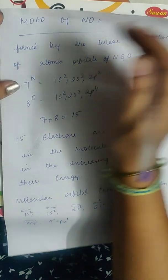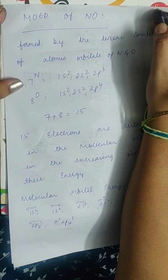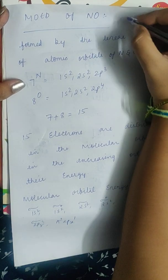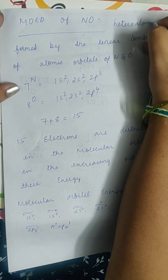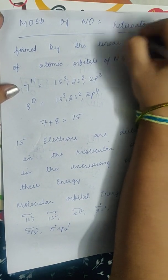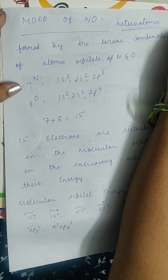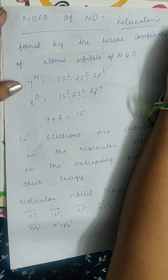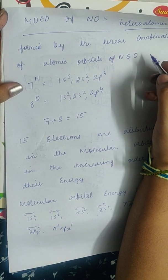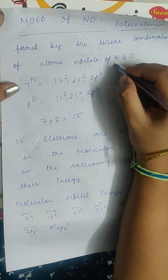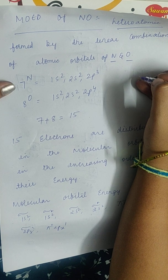Good afternoon girls. Today we are starting with the molecular orbital energy diagram of nitric oxide. It is a heteroatomic molecule because it is formed by the combination of two different atoms, that is nitrogen and oxygen. So if you take nitric oxide, it is formed by the combination of the atomic orbitals of nitrogen and oxygen, so it is heteroatomic.